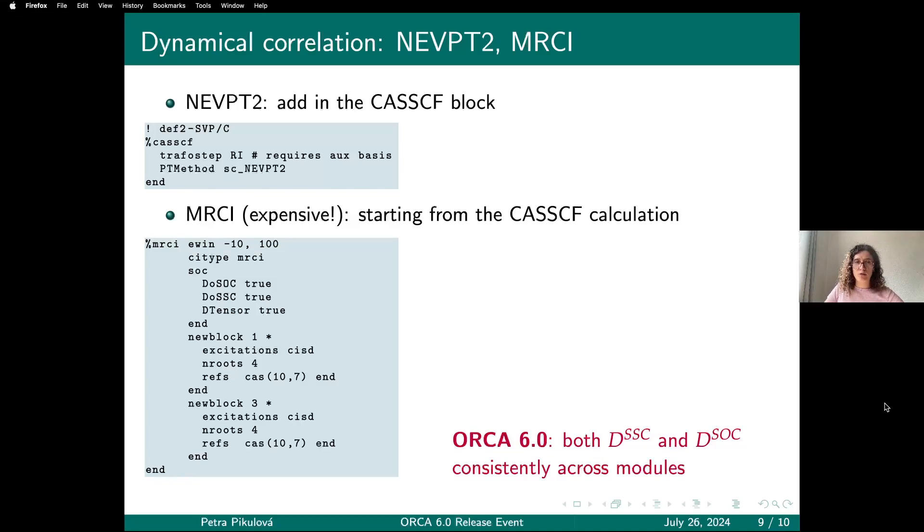But it's also possible to do QDPT with other ORCA modules. Here is an example input for multi-reference CI, where I'm starting from the same CASSCF calculation and using this CASSCF wave function as a reference for CISD. Again, I'm asking for spin-orbit coupling and spin-spin coupling.